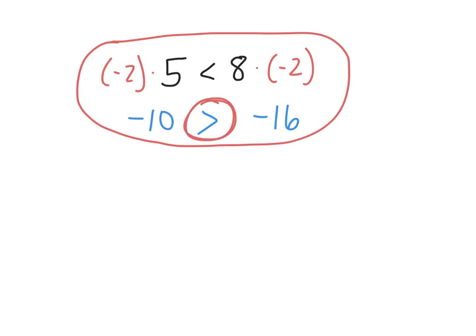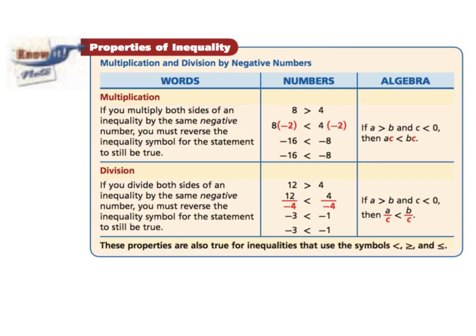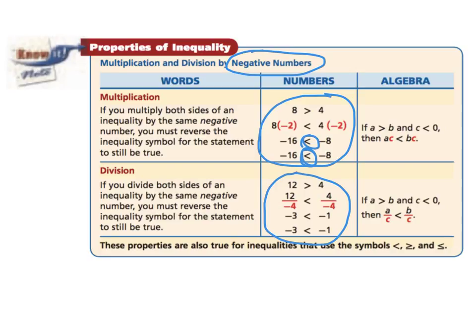So that's our little catch: when we multiply or divide by a negative, we have to flip the inequality around. Let's make it official. We'll discuss the multiplication and division properties of inequality focusing on negative numbers. When you multiply both sides by a negative, if you don't flip that inequality around, you won't end up with a true statement. Whenever you multiply or divide by a negative number, as soon as you do it, you have to flip that symbol over.